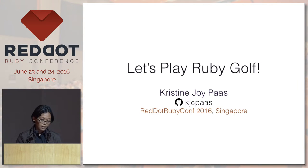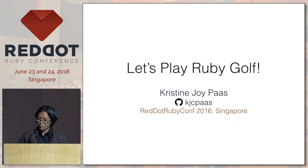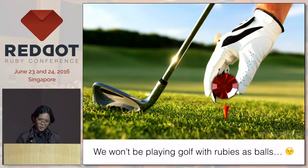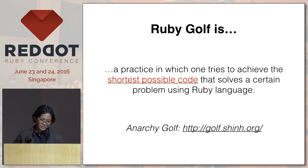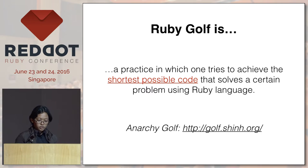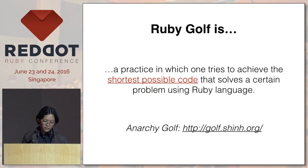You can approach me any time. So going back, let's play RubyGolf. Though we won't be playing it like this — it's just too expensive. It's the wrong type of golf. The RubyGolf that I'll be talking about is a practice where one tries to achieve the shortest possible code that solves a certain problem, and in this case it's using the Ruby language.